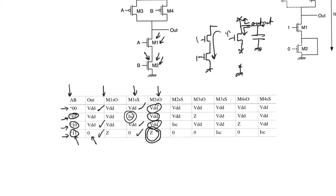The input 01 is the input that exposes the M1 stuck short fault. For input 01, transistor M2 is on and transistor M1 is supposed to be cut off — but because it is stuck short, it's also on. This creates a path to ground that should not exist, and we cannot rely on M2 to cut this path because for that input combination M2 is supposed to be on. The same situation also applies to the fault M2 stuck short.